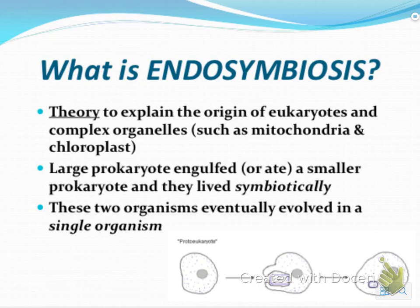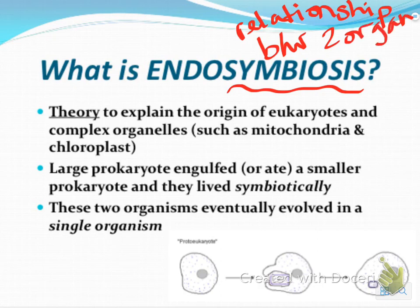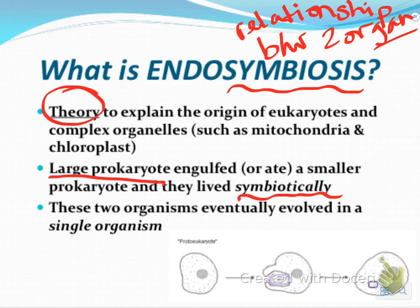Continuing with that idea of first eukaryotes on Earth, there's something called the endosymbiotic theory, or endosymbiosis. You should remember that symbiosis is a relationship between two organisms. This is a theory to explain the origin of eukaryotes and complex organelles. The idea is a large prokaryote engulfed or ate a smaller prokaryote, and then they lived symbiotically. They eventually evolved into a single organism — a eukaryote.